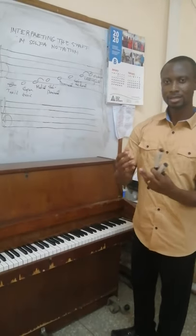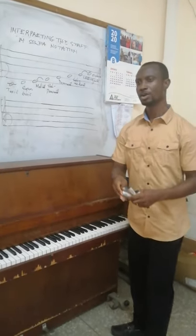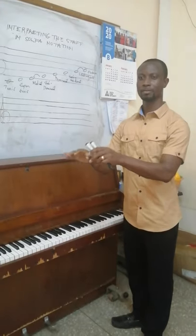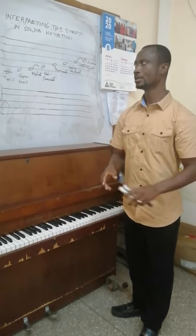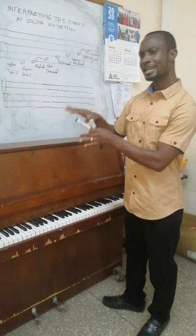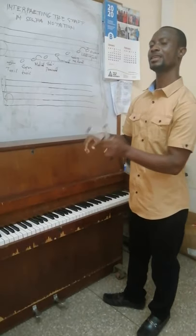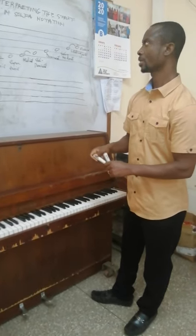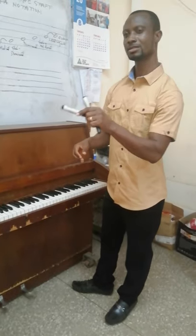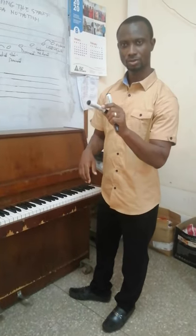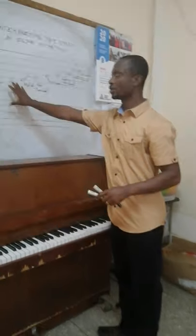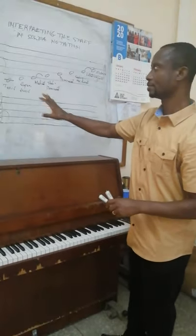A key signature will help us identify the tonal center of a particular key or a given key. The key signature is named by its tonal center. So if we say key G, it means that the tonal center is on G. But I would like us to start on the fundamental key, which is key C.